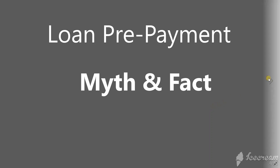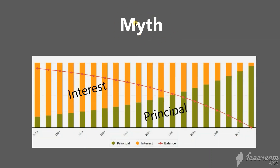Before we understand the myth, let's see this graph quickly. This is a very typical loan payment graph with no extra prepayment — just the simple EMI. The top part is the interest and the bottom part is the principal. Typically, in the initial few years you will see more interest, which declines with time, and in the initial years you will see less of the principal, which increases with time.